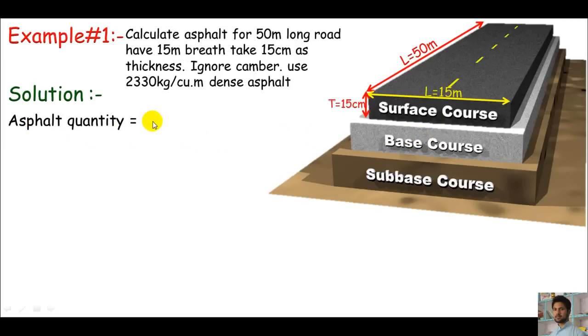The quantity of asphalt means the volume, which is length times breadth times thickness or height, because this is a rectangular prism. I can write these in short form: L for length, B for breadth, T for thickness.